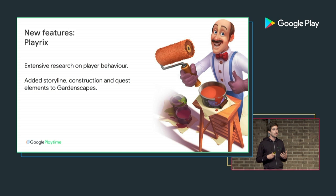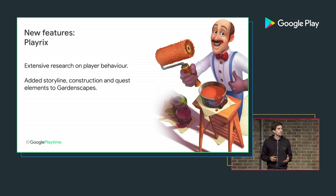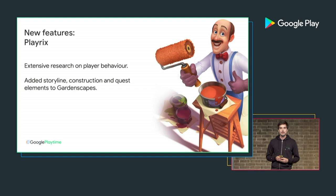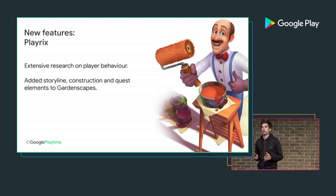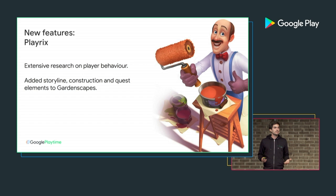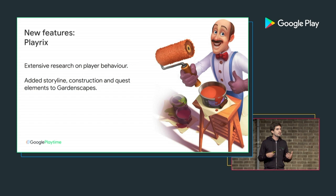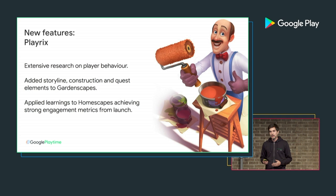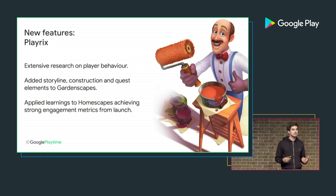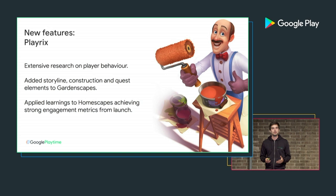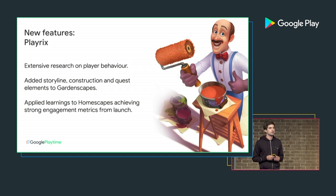They started testing and adding elements of storyline, quests, and narrative to their game, and they found that the vast majority of their players actually loved these parts. Only a very small percentage were playing purely the core match-three mechanics. They leveraged these insights when working on Homescapes, adding quest and storyline elements there too, which allowed them to achieve amazing retention and engagement numbers right from day one after Homescapes launched — even higher than Gardenscapes.